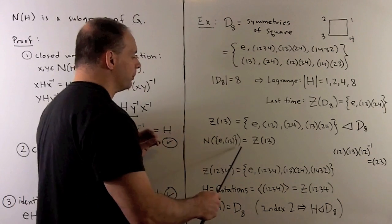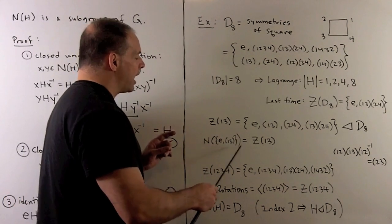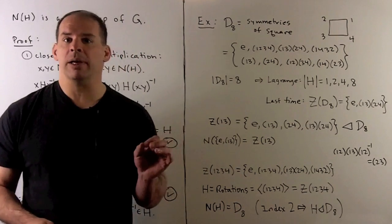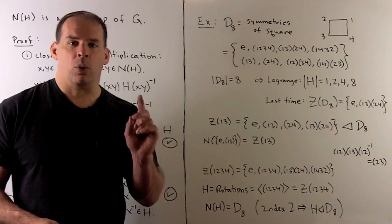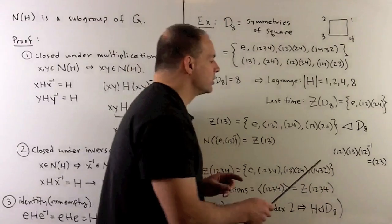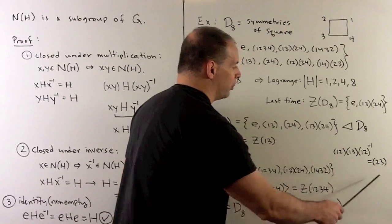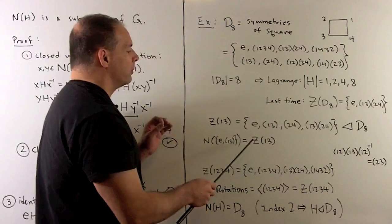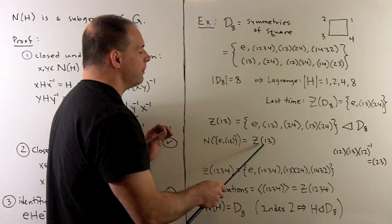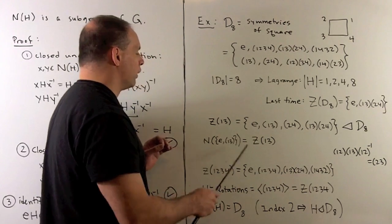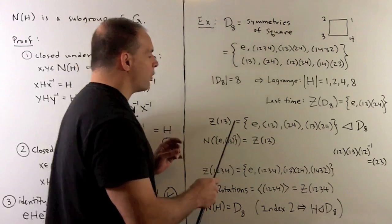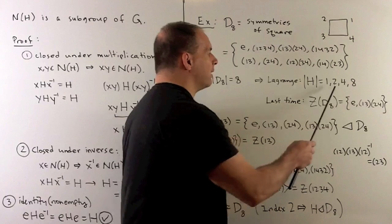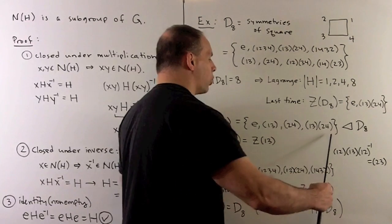Now for the normalizer - if I conjugate the subgroup here, the identity element has to go to the identity element, so (1,3) would have to go to (1,3). That means we're not going to be the entire group by this calculation. We know the centralizer of (1,3) is going to be in the normalizer of the subgroup. So we have all of these elements, and again, because we have four and we don't have all eight of them, this is our normalizer.